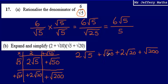That's the expanding part done. Now I need to simplify. To do that I need to look at each of these roots and ask: are there any square numbers which are factors of the values under these square roots? Does 50 have any square number factors? Does 20? Does 200?